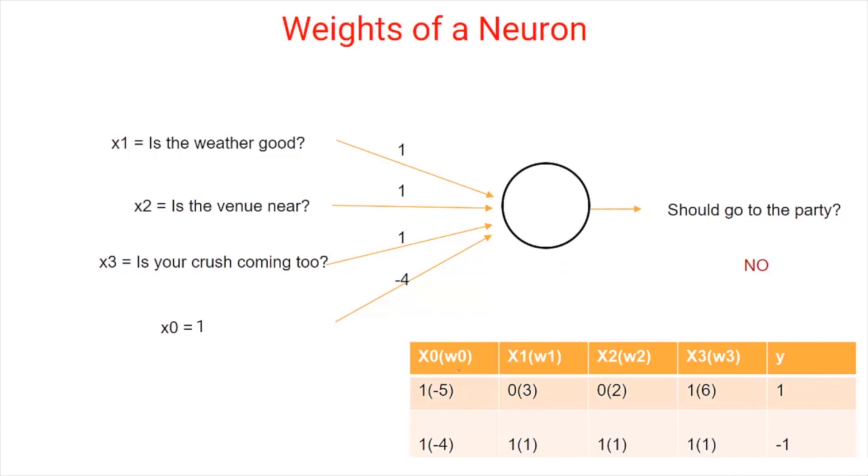These W0, W1, W2 and W3 are called the weights of neurons and are different for different neurons. These weights are the ones that a neural network has to learn to make good decisions.